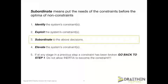In order to successfully exploit the system's constraint, it almost always requires the cooperation and active engagement of many different groups of people in the plant. This is step three — subordinating to the above decisions. The decisions we made to exploit the system's constraint. For example, if the CCR is a machine, one way to exploit its scarce capacity is to make sure that the machine is in good working order, all required maintenance is performed and up to date. And if the machine breaks down, maintenance drops whatever else it is doing in the plant and comes running to the CCR.